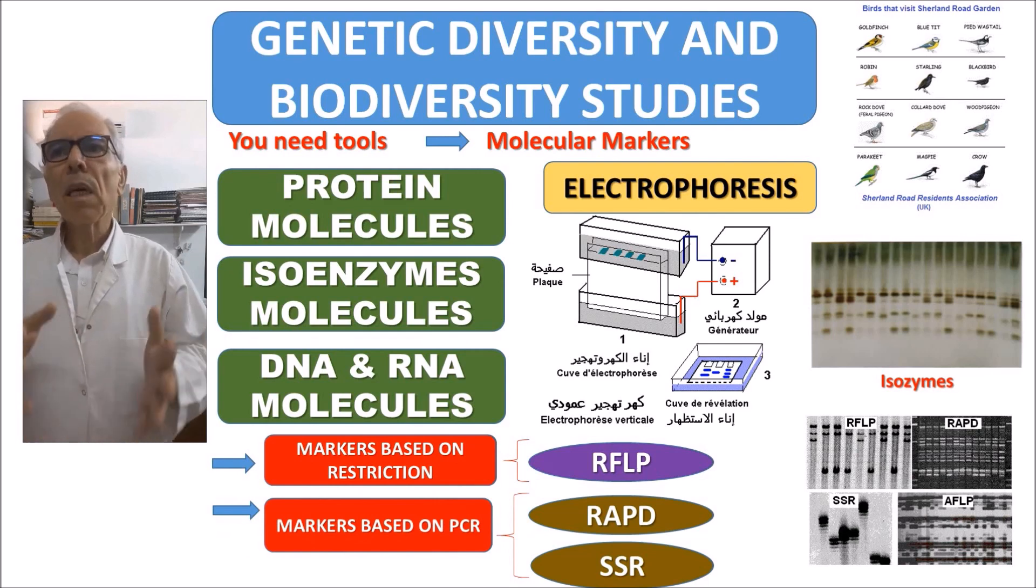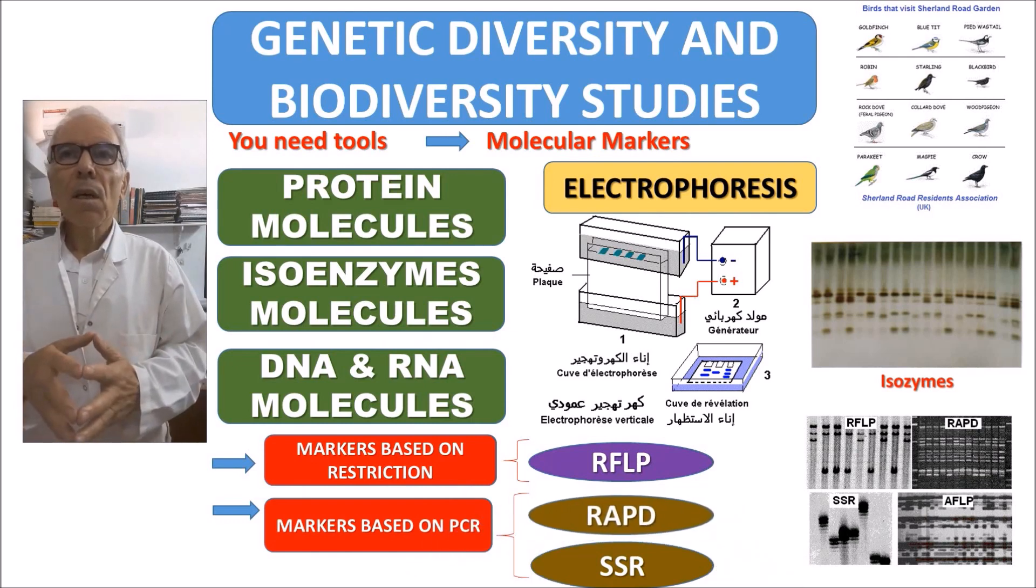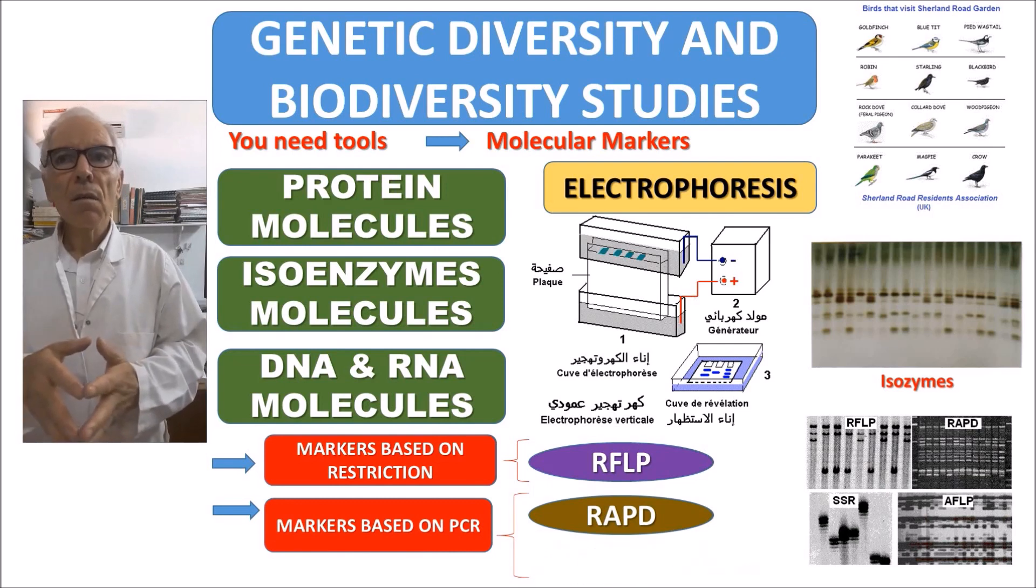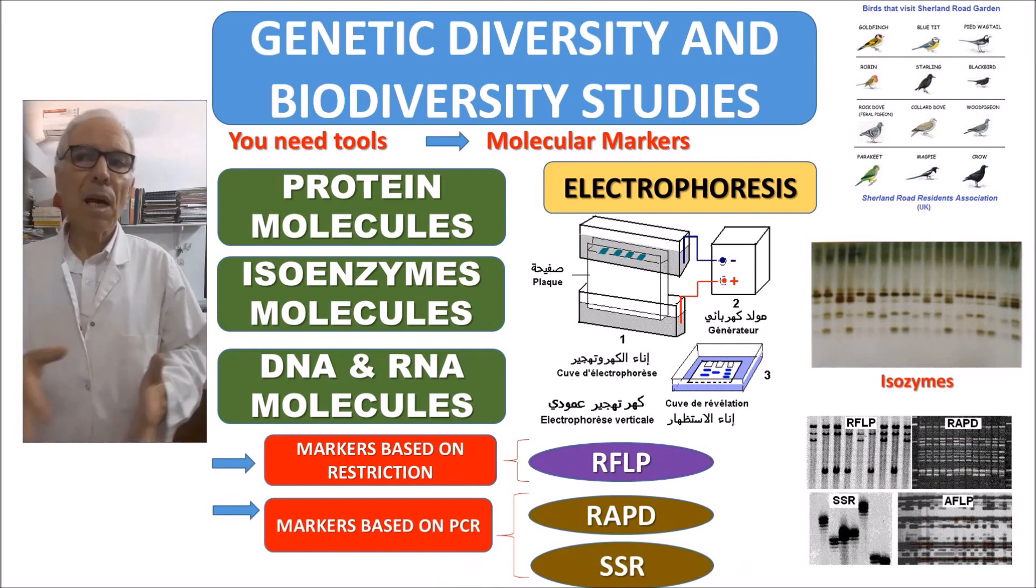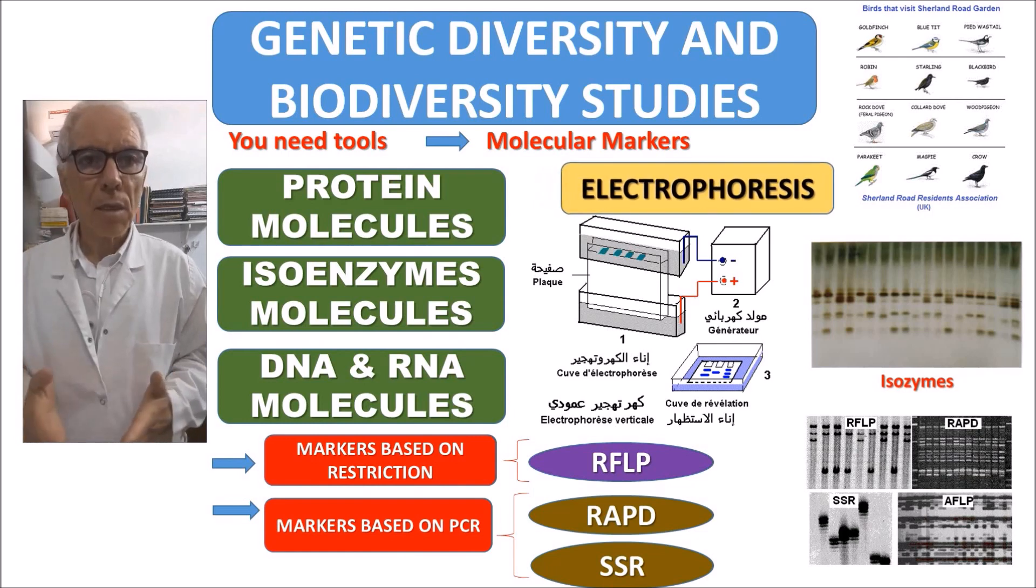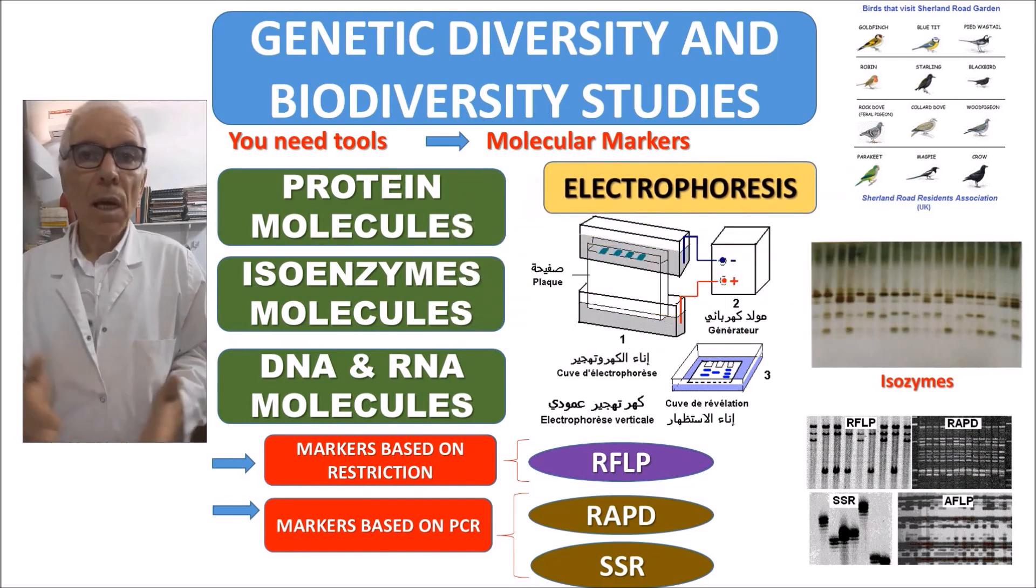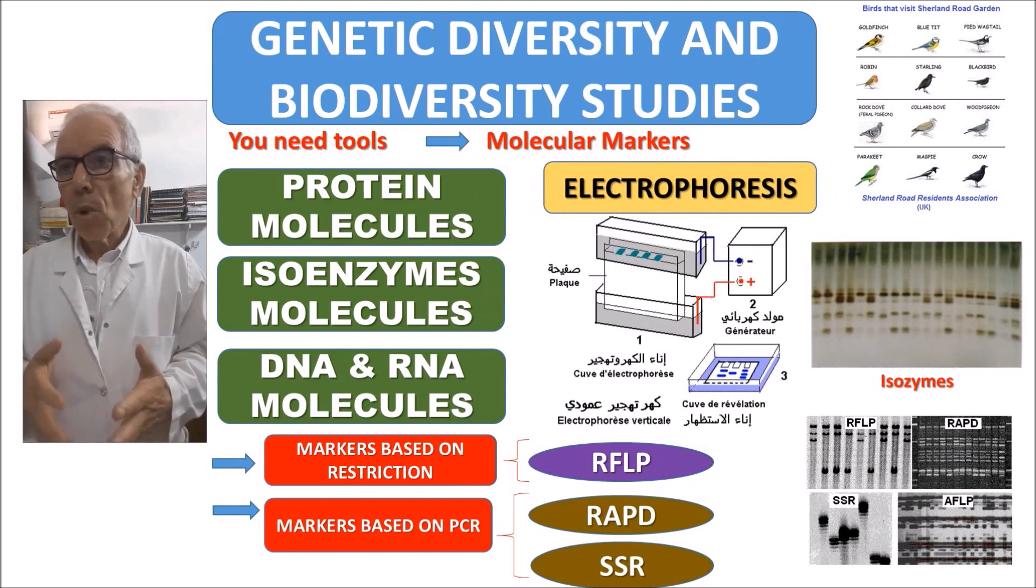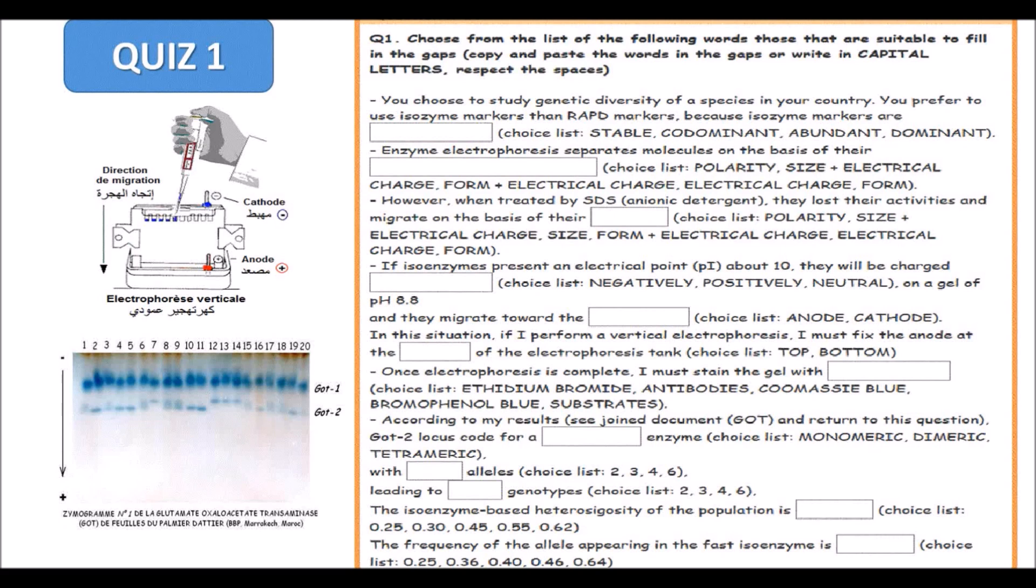On the other hand, instead of cutting DNA we can amplify it with PCR - polymerase chain reaction. In this field we have many markers based on PCR. For example, we can have RAPD - random amplified polymorphic DNA where DNA will be amplified randomly. We can also have markers based on PCR such as microsatellites which are called SSR and many other markers. If you want to develop all these markers, you have to know what is electrophoresis. Electrophoresis is a technique that separates molecules.